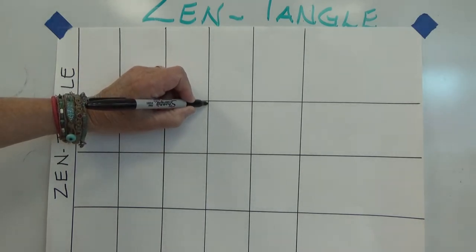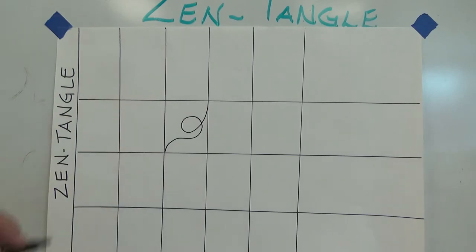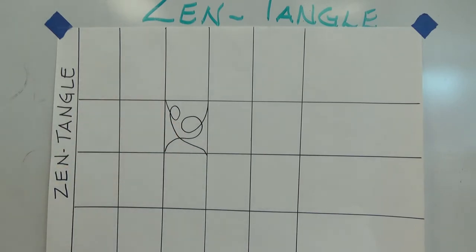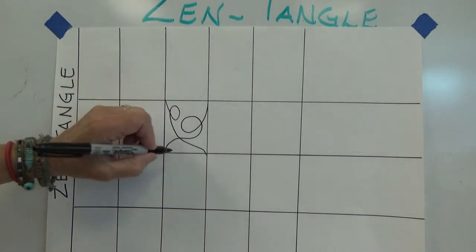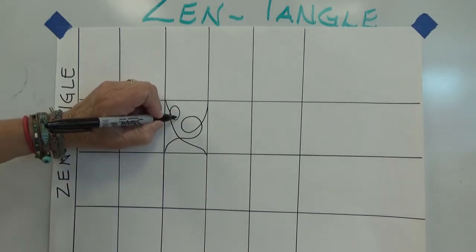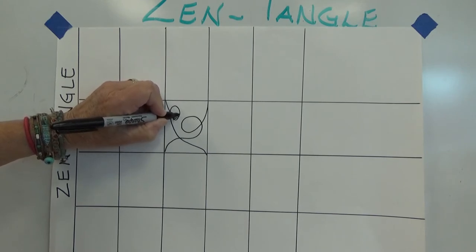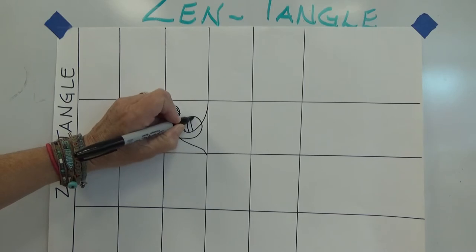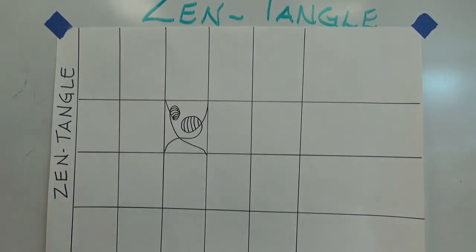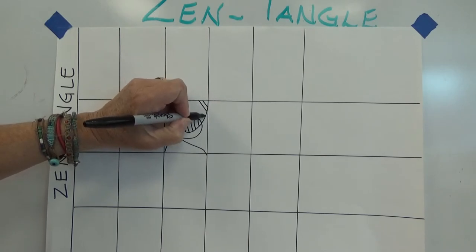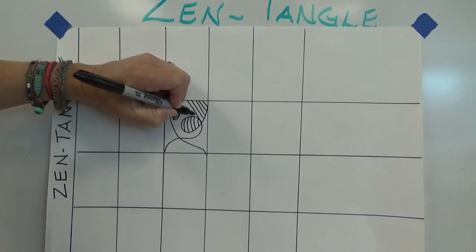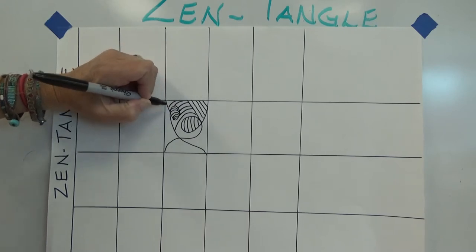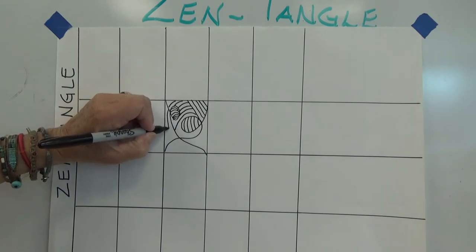But if you take this and just divide it, you can divide it again. So now we have some more lines in there. Then what you can do is inside each of these little shapes that you've created, draw some other lines. So now what you're doing is learning how to zentangle. These lines can go in all different directions. There's no right, there's no wrong, but we're just dividing the space into different patterns.